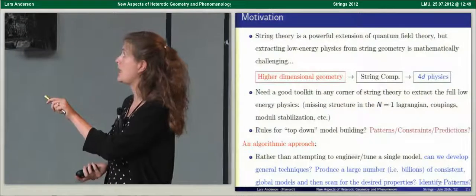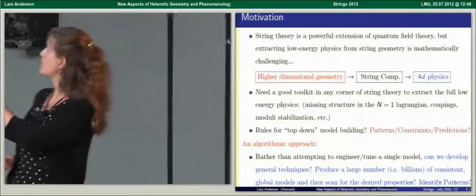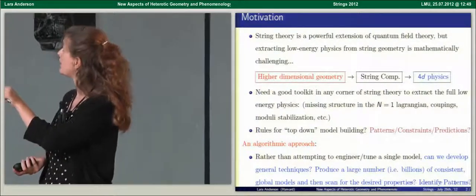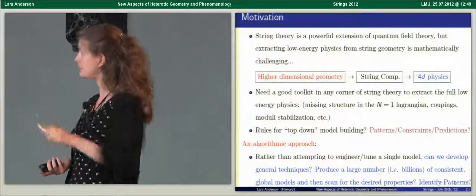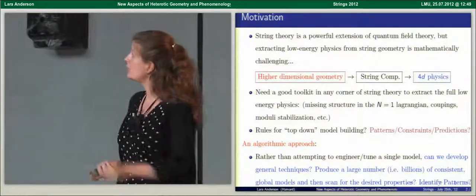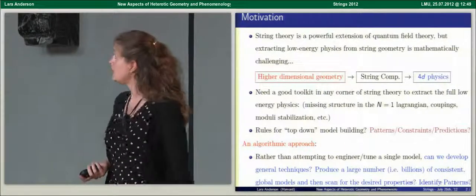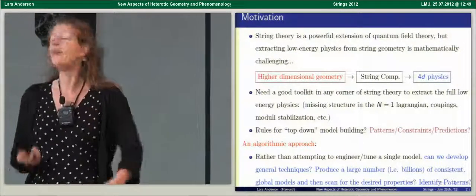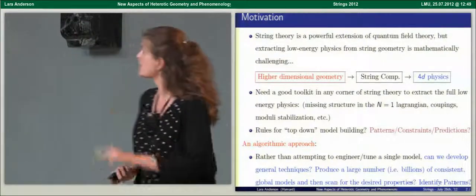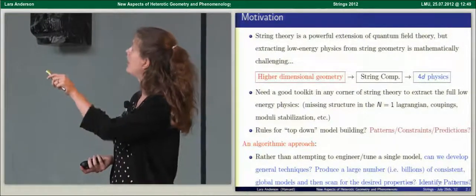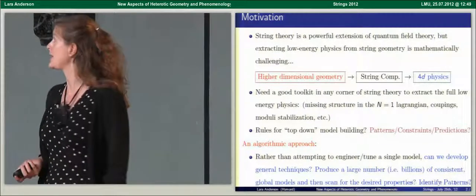In many corners of the string landscape, you're missing features of some N=1 supersymmetric Lagrangian couplings, you have issues with moduli, and you don't really understand the rules for how you select these geometries. So it would be good to have a better understanding of the patterns, constraints, and predictions — from a top-down point of view — that would give you interesting 4D physics in the arena of your choice.